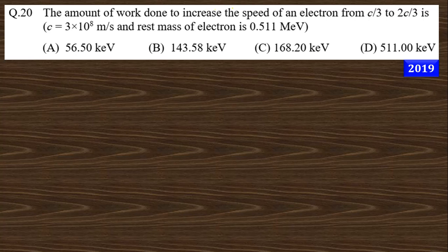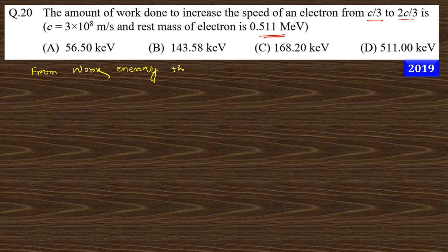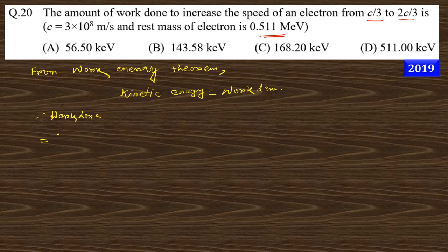The next question asks for the amount of work done to increase the speed of an electron from c/3 to 2c/3, where c is the speed of light and the electron rest mass is 0.511 MeV. From the work-energy theorem, we can say the kinetic energy equals the work done. So work done equals total energy mc squared minus rest energy m₀c squared, and m equals m₀ divided by the square root of 1 minus v squared over c squared, minus m₀c squared. This is the work done.